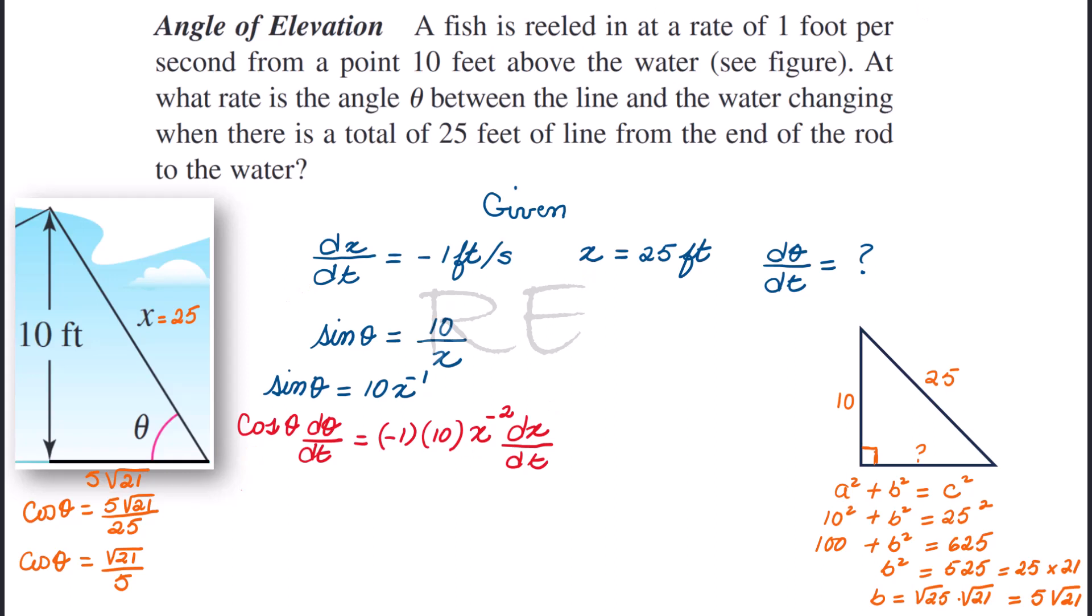Let's substitute these values in our formula to get dθ/dt. Cosine theta, which is square root of 21 over 5, times dθ/dt equals negative 1 times 10 times 1 over x squared. So we will divide by 25 squared times dx/dt, which is negative 1.